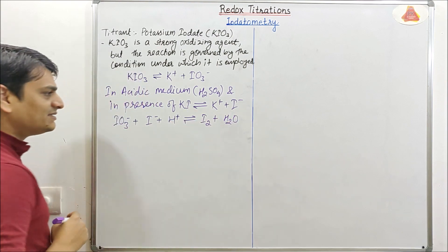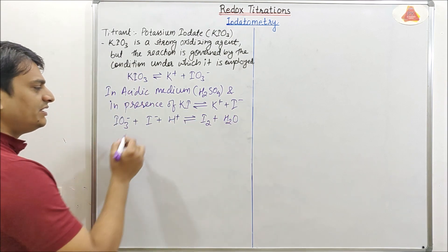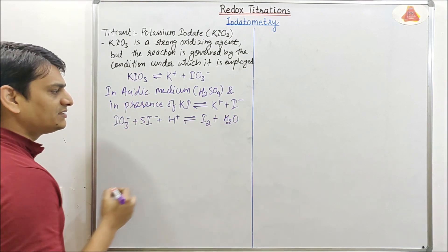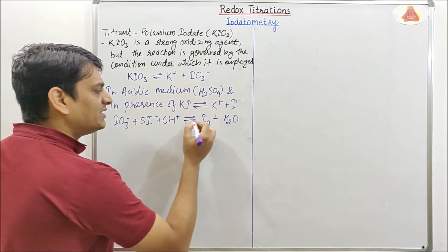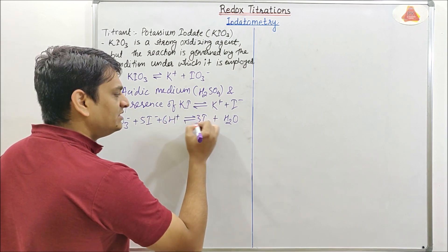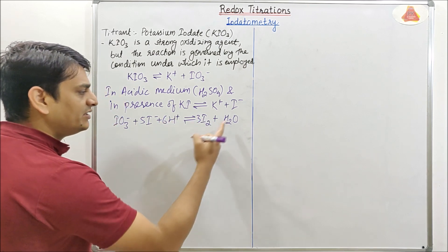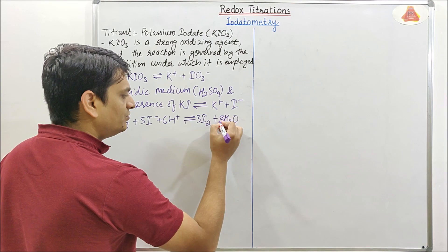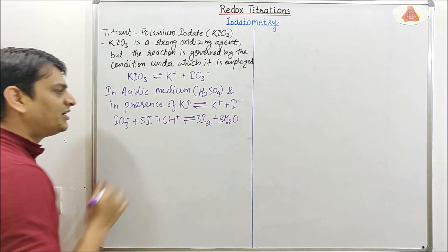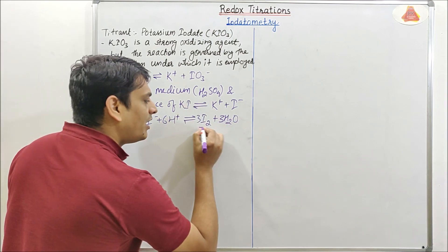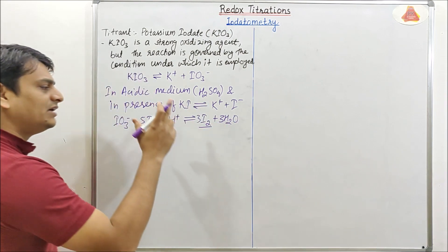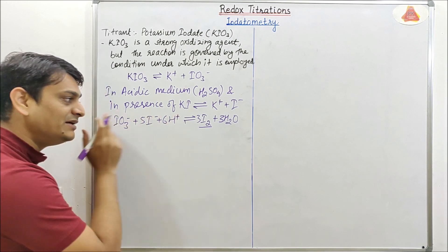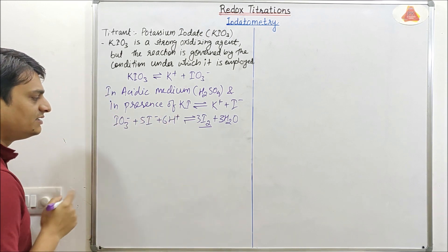If you balance this equation, it will be: IO3 minus plus 5I minus plus 6H+ gives 3I2 plus 3H2O. After this reaction, I2 is generated, and the amount of this I2 will be known to the analyst.